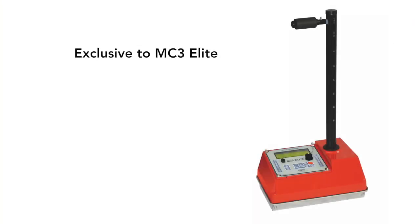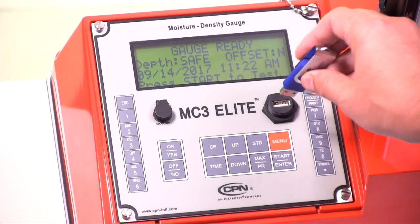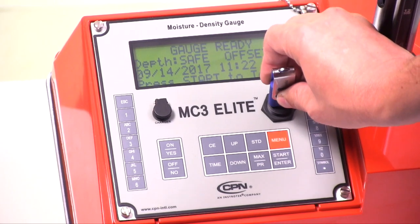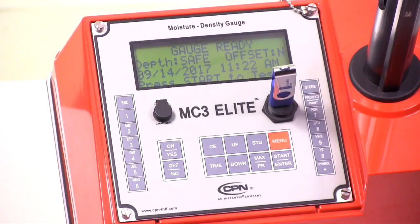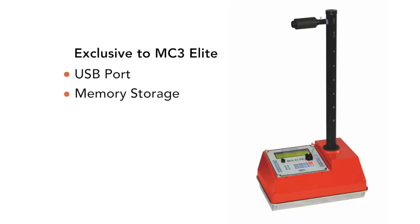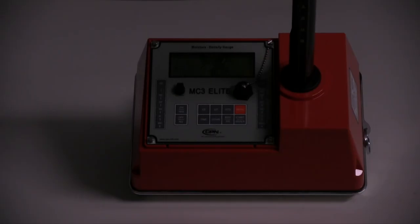Other features exclusive to the MC3 Elite Gauge include a USB port for easy download of all gauge data with date and timestamp, standard counts and gauge offsets, memory storage for project information and storage of test results, and a backlit alphanumeric keyboard for easy nighttime work.